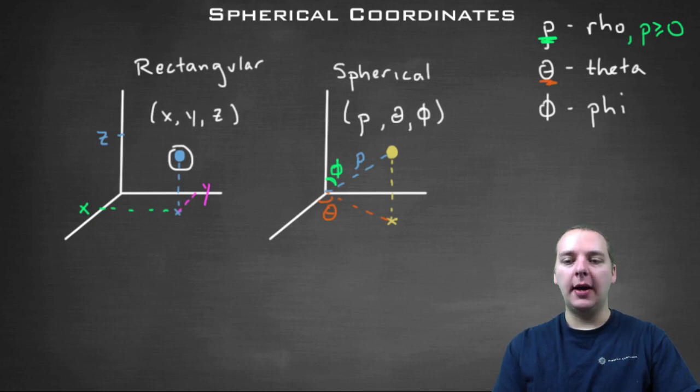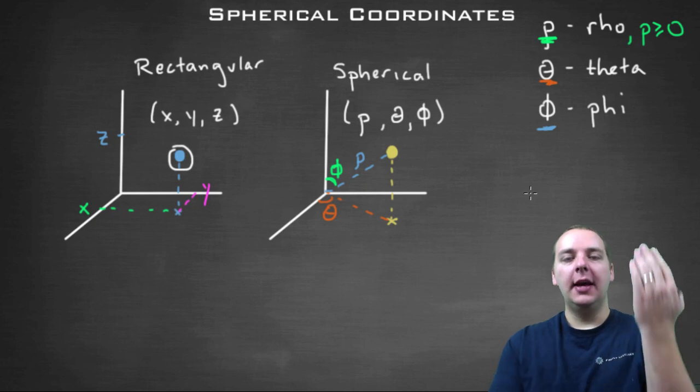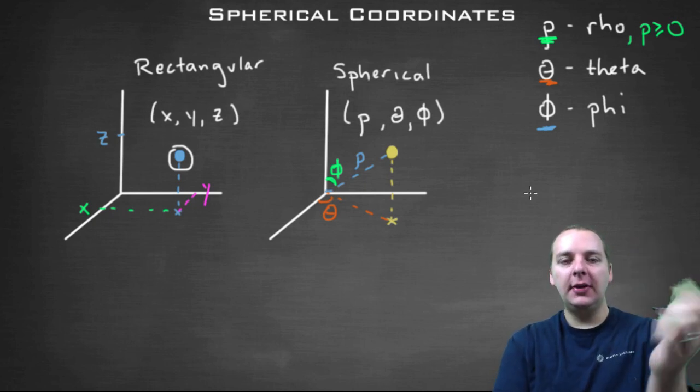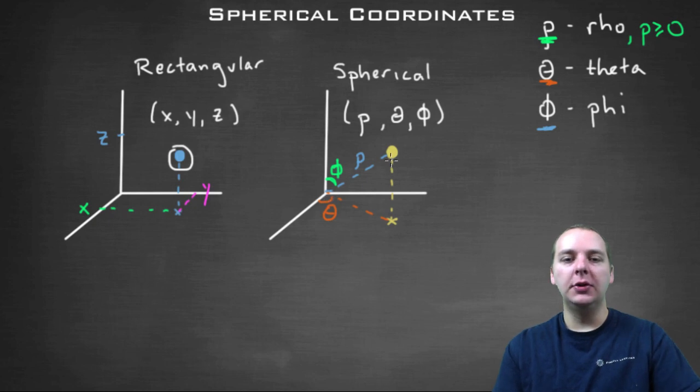Your new guy, your new angle, is going to be phi. Phi we haven't seen before. This is another angle, but it's the angle from the positive z axis down to the line segment from the origin to the point.